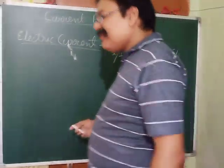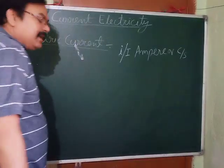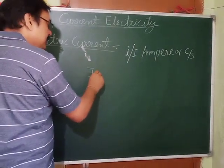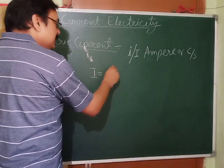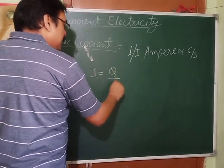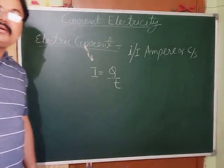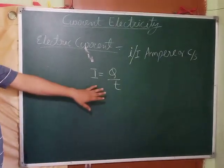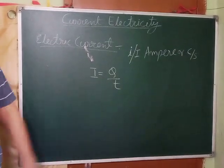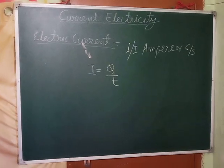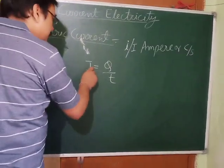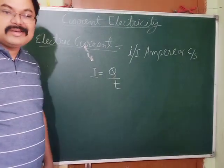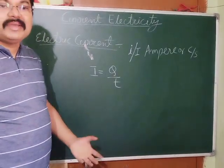It is given by I equals to Q upon T. This is average current which you have studied in class 10. Total charge flown through that cross section of a conductor divided by total time taken.